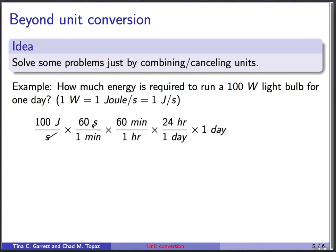So the seconds are gone, the minutes are gone, the hours are gone, the days are gone, and I'm going to end up with a number of joules that's 100 times 60 times 60 times 24. And that number turns out to be about 8.64 times 10 to the sixth joules.